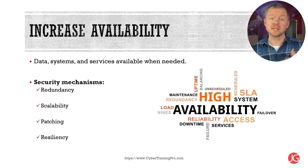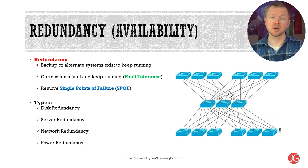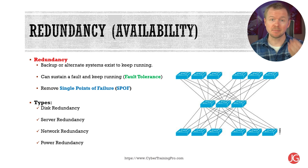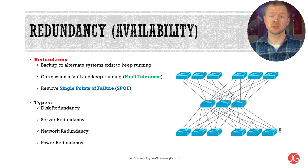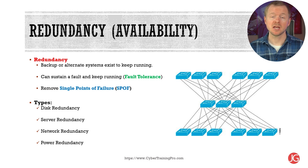The third and final piece of the CIA triad is availability, which means we try to make our data and services available when our users need them. Redundancy means having backup or alternate systems so everything keeps running, making systems fault tolerant and removing single points of failure. Types of redundancy include disk redundancy or RAID, server redundancies with backup servers, network redundancies like load balancers to prevent bottlenecking, and power redundancies like UPSs or uninterruptible power supplies.